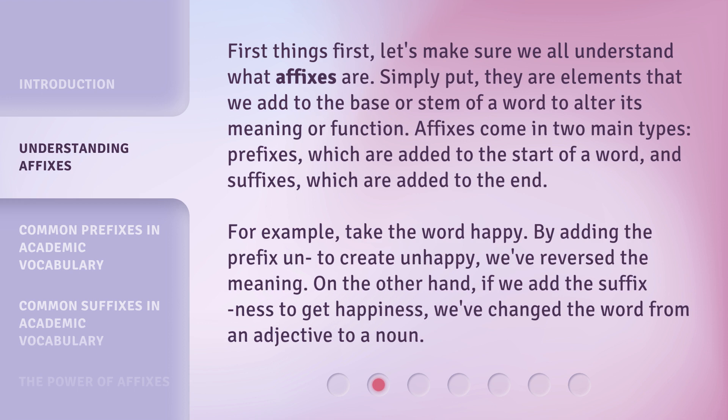For example, take the word 'happy.' By adding the prefix 'un' to create 'unhappy,' we've reversed the meaning. On the other hand, if we add the suffix '-ness' to get 'happiness,' we've changed the word from an adjective to a noun.